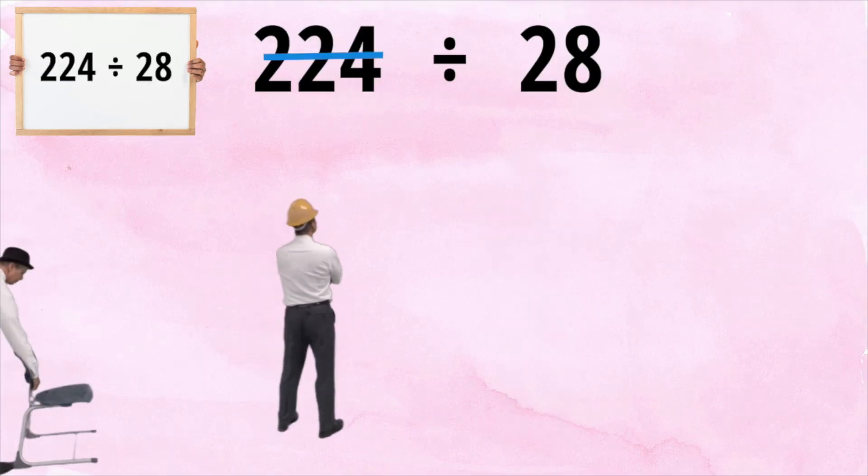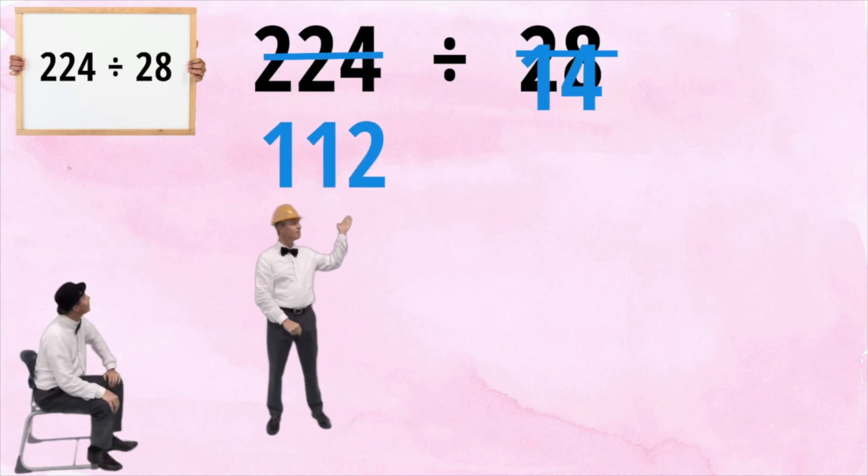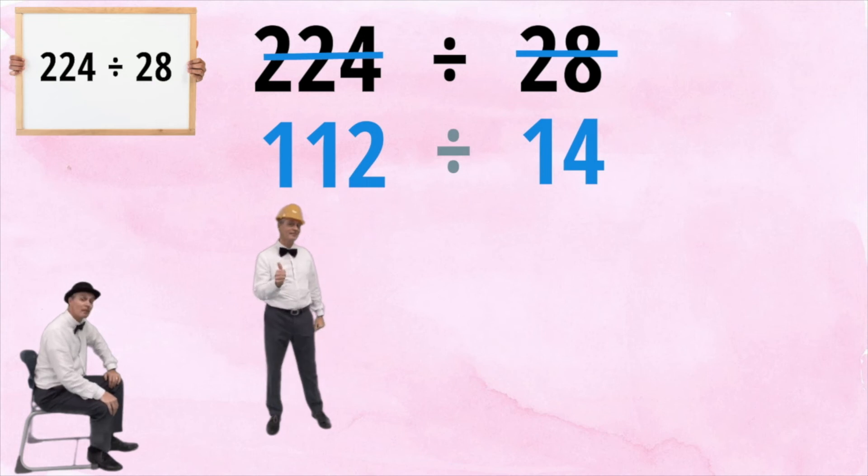Half of 224 is 112, and half of 28 is 14. Better, but still difficult.